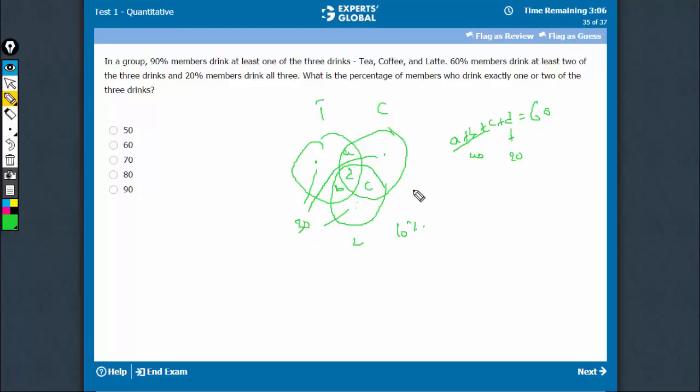We have every part of the diagram clear. The question is, what is the percentage of members who drink exactly one or two?